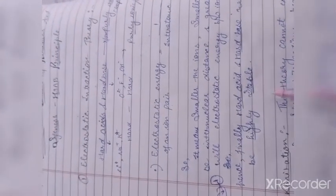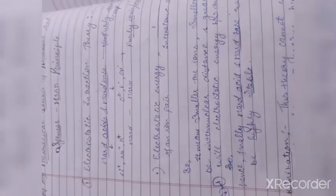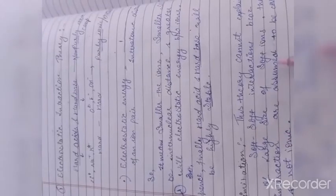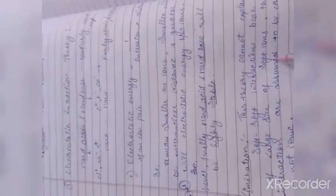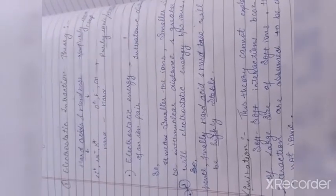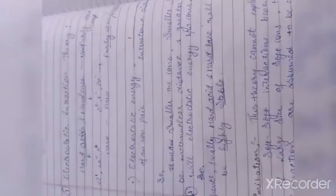यह जो theory थी, electrostatic interaction theory, इसके limitation थी. इसने soft soft interaction के बारे में explain नहीं किया था, because of large size of soft ions, और जो interaction है, उनके बीच में वो covalent होता है, instead of ionic.